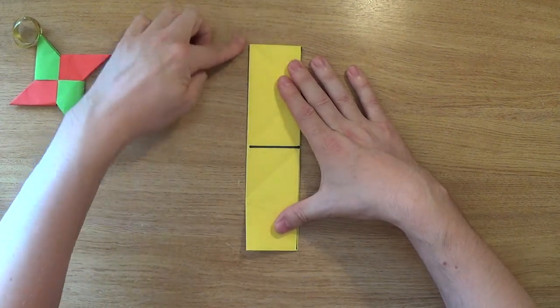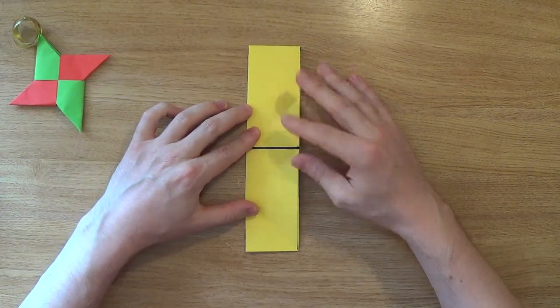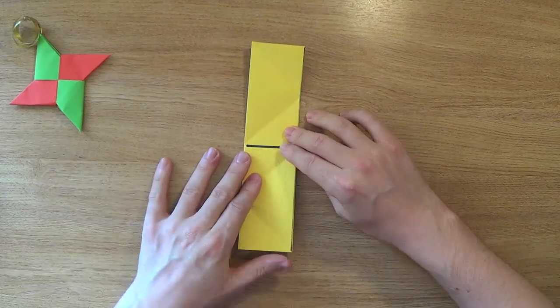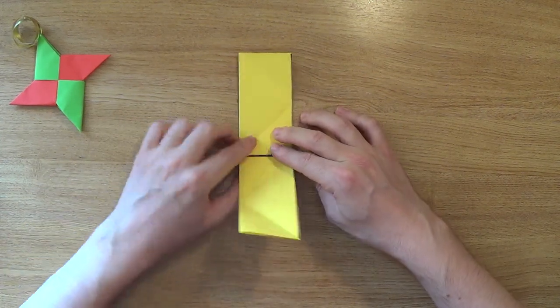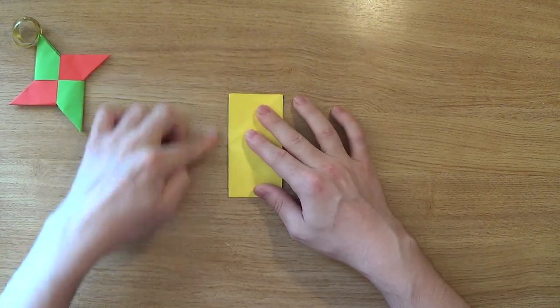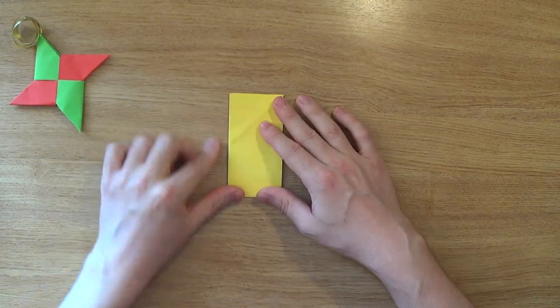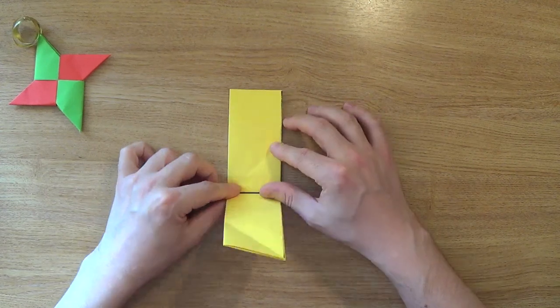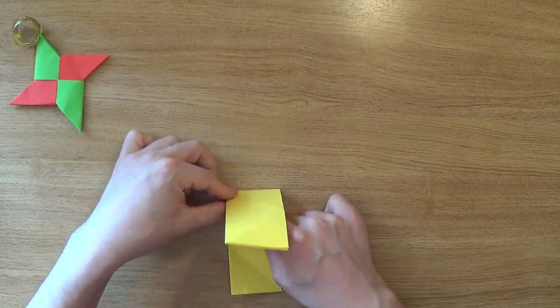So now we've got a 1 to 4 ratio height and we're going to fold that over the top. So we're going to fold it in half over the top like that. So now it's 1 to 2. Now once we've folded it in half like that we're going to unfold that again. So we've got our crease in the middle there.